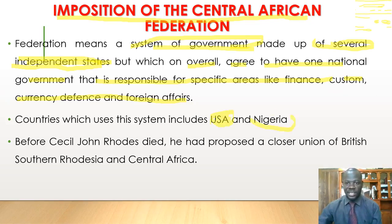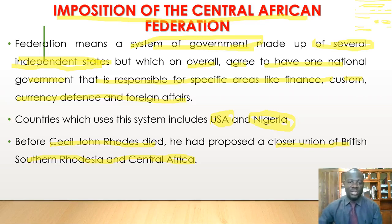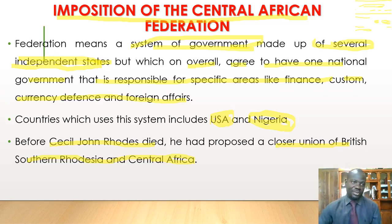Countries that currently use this system of government include the USA and Nigeria, which have federal governments. Before Cecil John Rhodes died, he had proposed a closer union of British Southern Rhodesia and central Africa. So Rhodes proposed there must be a closer union between Southern Rhodesia and central Africa — that was the beginning of the idea of federation.